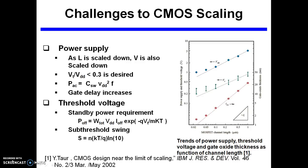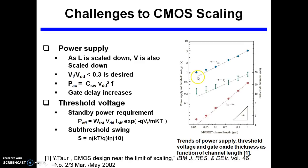The challenges of CMOS scaling: as we are going to reduce the length of the MOS transistor, we are required to reduce the supply voltage also. And as we reduce the supply voltage, we are required to reduce the threshold voltage also. But as L is scaled down, VDD is also scaled down, but the scaling is not proportional to the length scaling — the VDD scaling is not proportional to the length scaling.